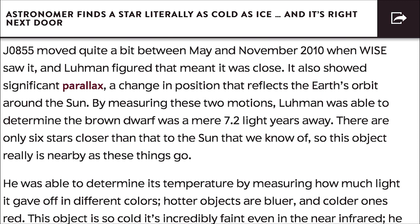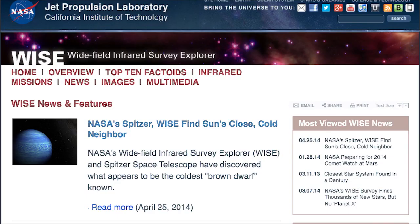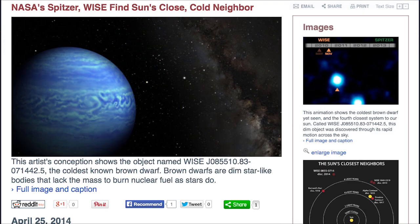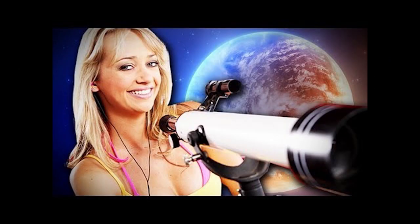You see, Luhman—why is that the same guy who directed that really bad movie with Kurt Cobain and dancing—he was able to determine its temperature by measuring how much light it gave off in different colors. Hotter objects are blue and colder ones are red.